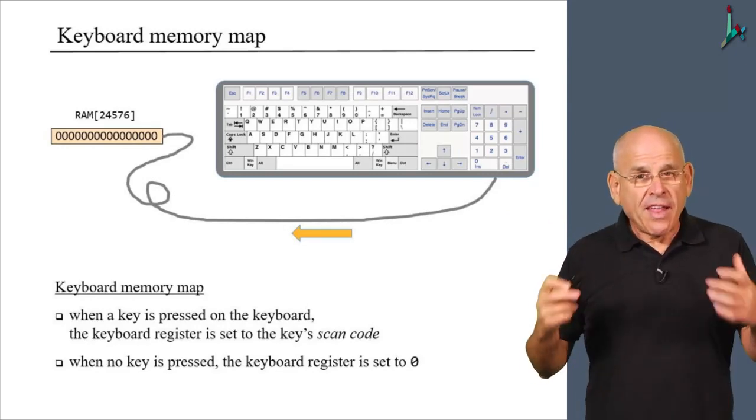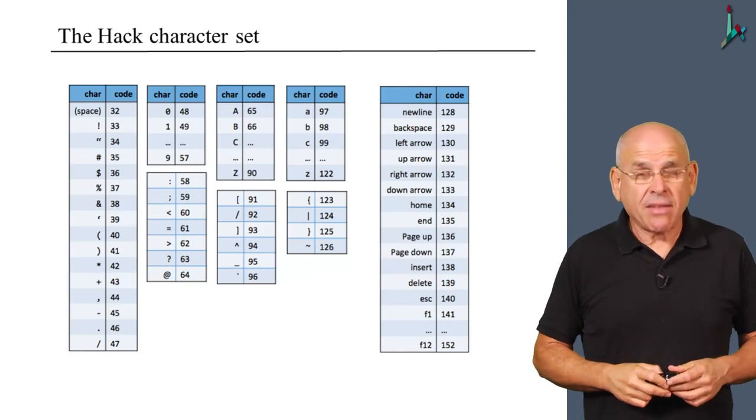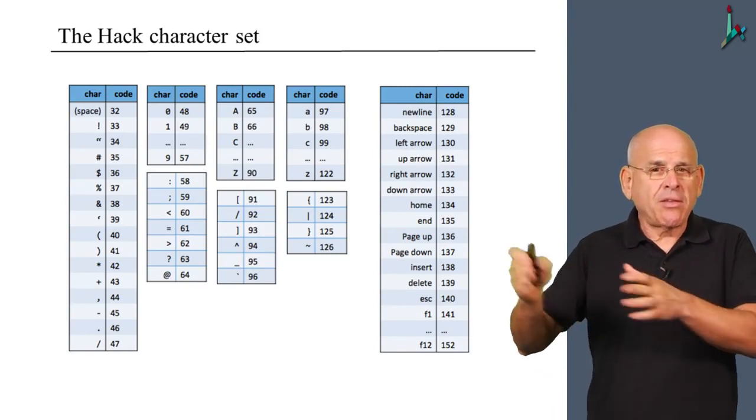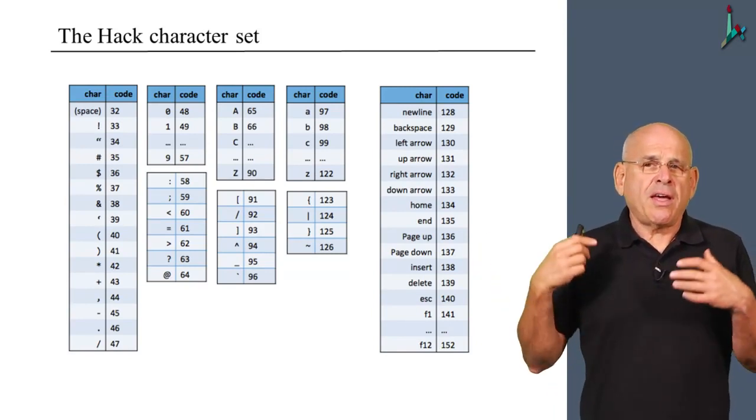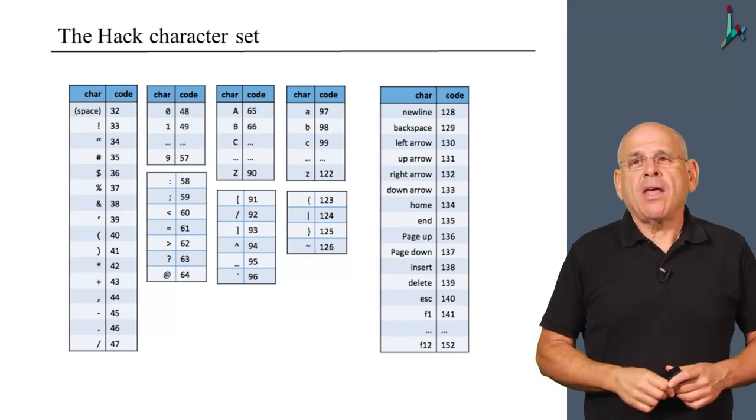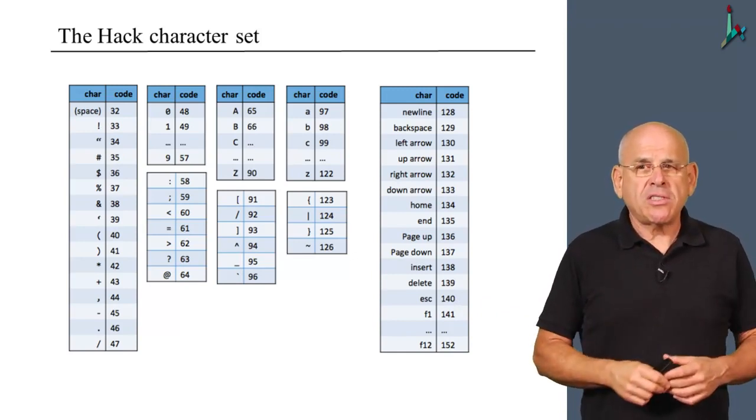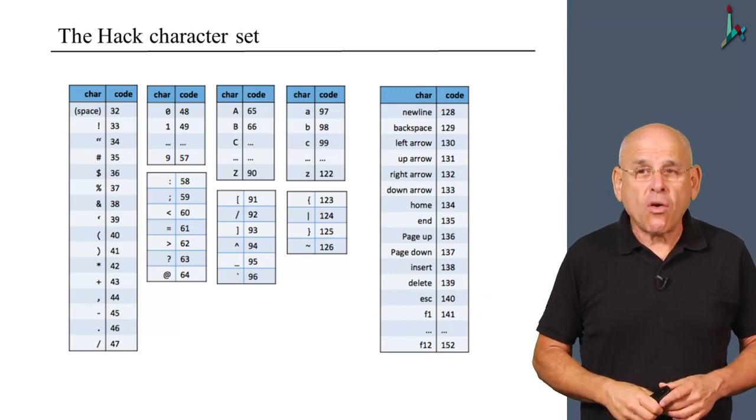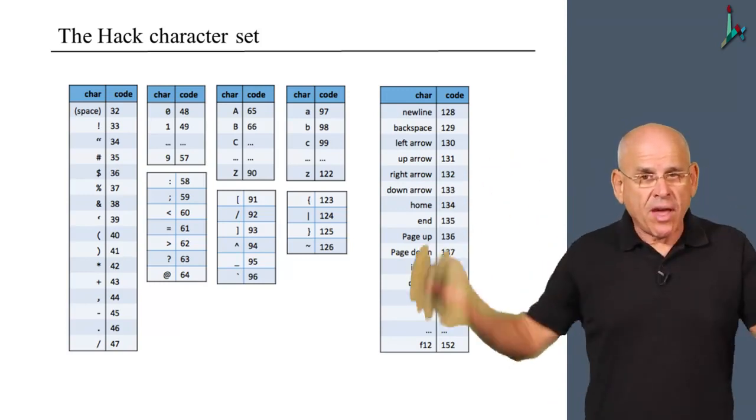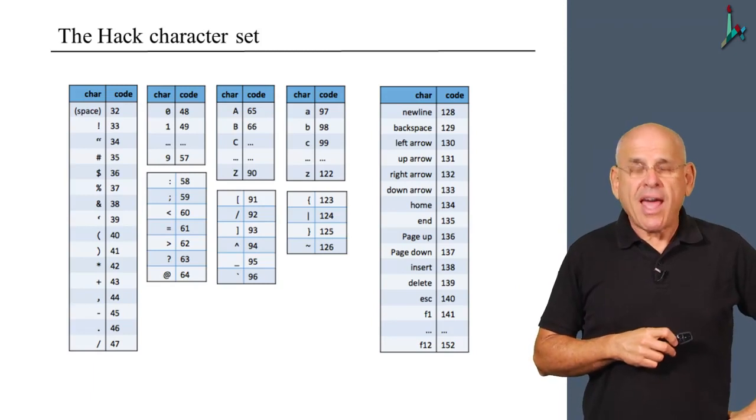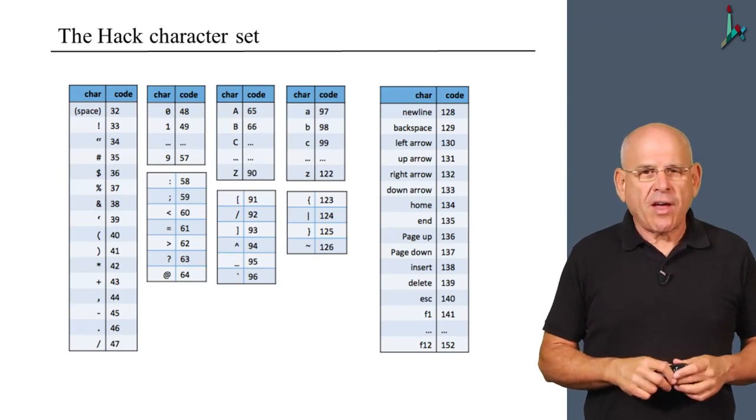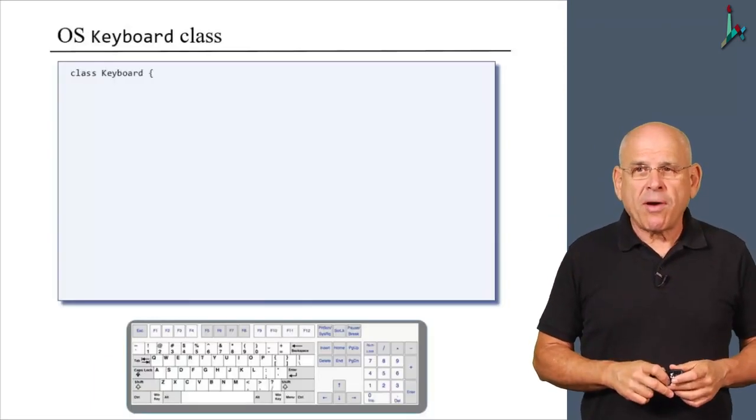With that in mind, here is the complete character set that the Hack computer recognizes. What you see here is a table, which I split into several columns to make it easier to follow. On the left column, you see the name of the character. It's an agreed upon name. And on the right hand side, you see yet another agreed upon code that represents this character using some integer value. Taken together, all these characters are the Hack Jack character set. Now that we understand the notion of characters, let's move on and talk about the keyboard class.